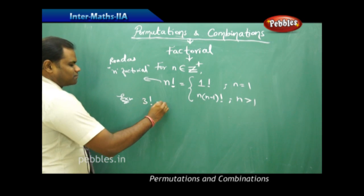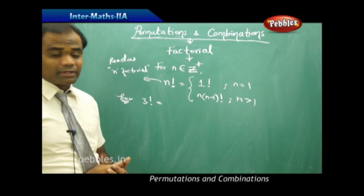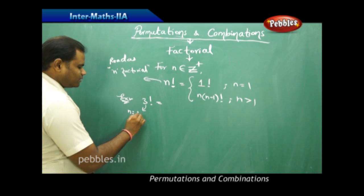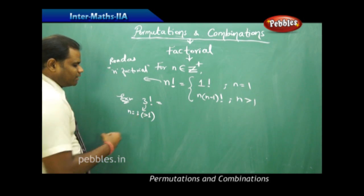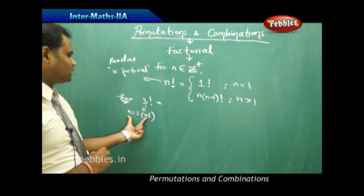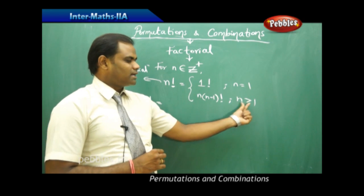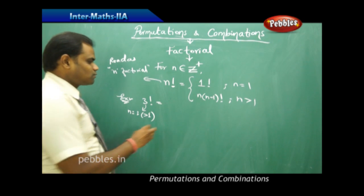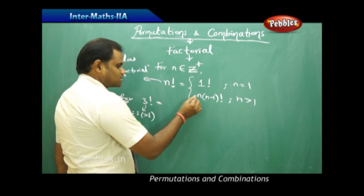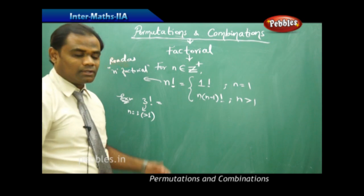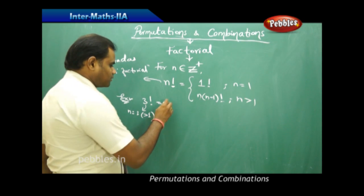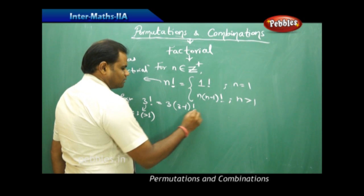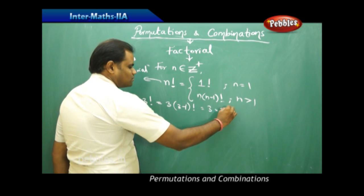Suppose I want to find 3 factorial. In this case n equals 3, which is greater than 1, so I use the second case of the formula: n factorial equals n times (n minus 1) factorial. Therefore 3 factorial equals 3 times (3 minus 1) factorial, which is 3 times 2 factorial.